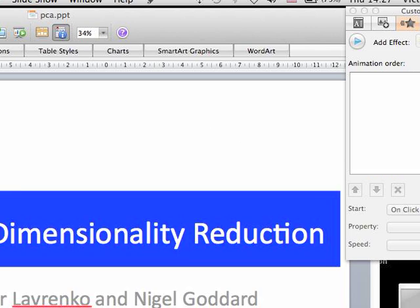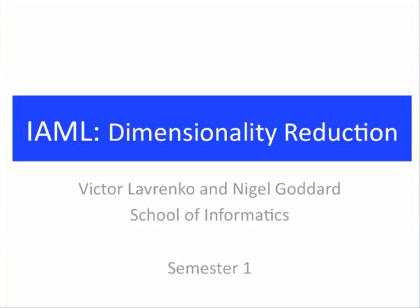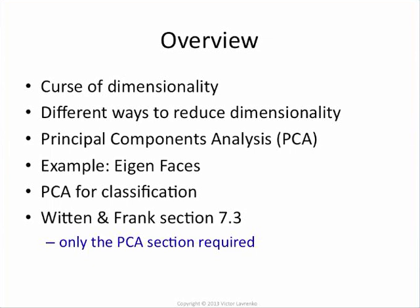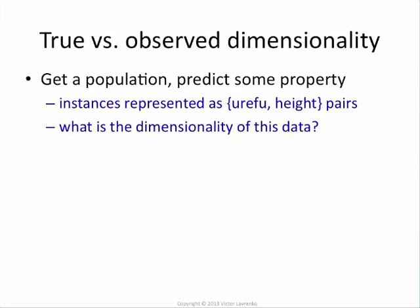What we're going to talk about now is dimensionality reduction. That's what I'm hoping to cover — if you're following the book, it's at section 7.3, but only the parts on PCA, nothing else really. I find it best to start with an example.